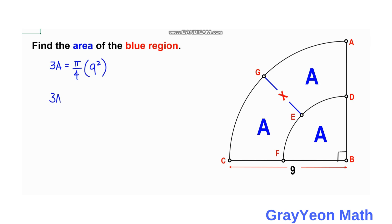So 3A equals pi over 4 times 81. And we can divide both sides by 3, so this becomes A and this becomes 27. So A equals 27 over 4 pi square units.